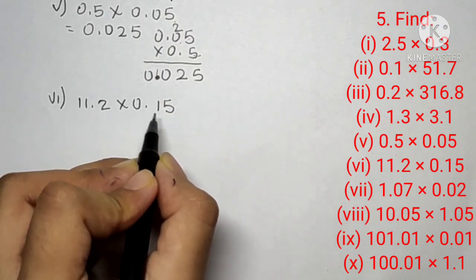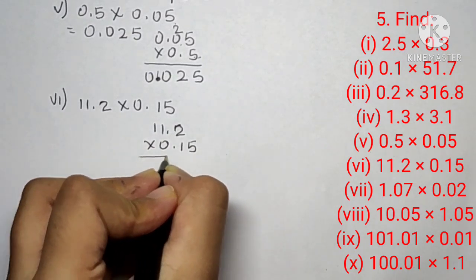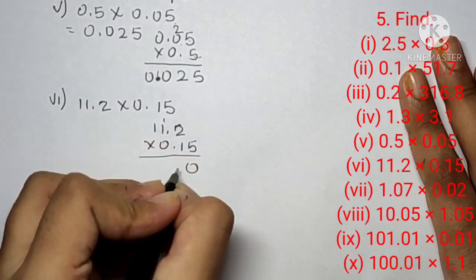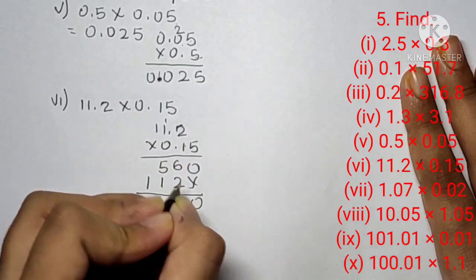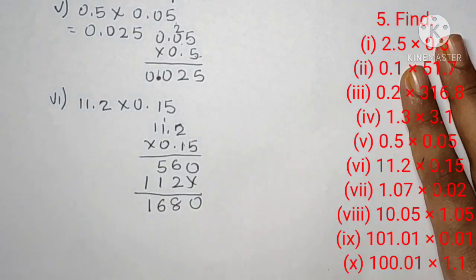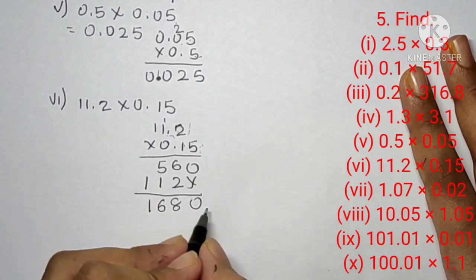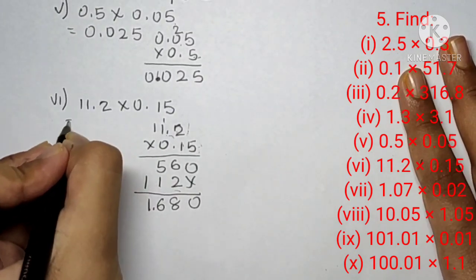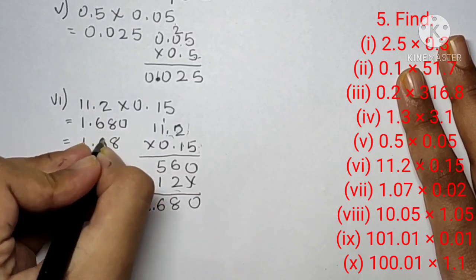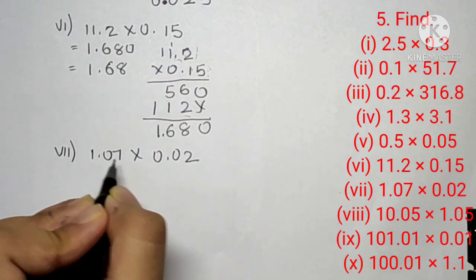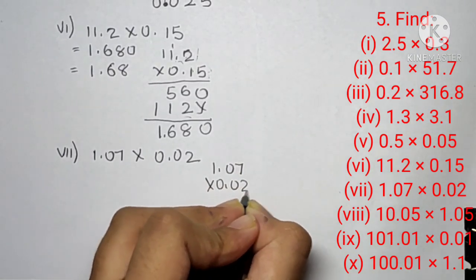Question number five, sixth part is 11.2 into 0.15. Multiplying gives: 2 ones are 2, 1 ones are 1, 0, 6, 2 eights are 16, 5 ones are 6 and 1. Now there are two decimal points: one is one digit from the last and one is two digits from the last, so 1 plus 2 equals 3 digits from the last. Our answer is 1.680, which equals 1.68.